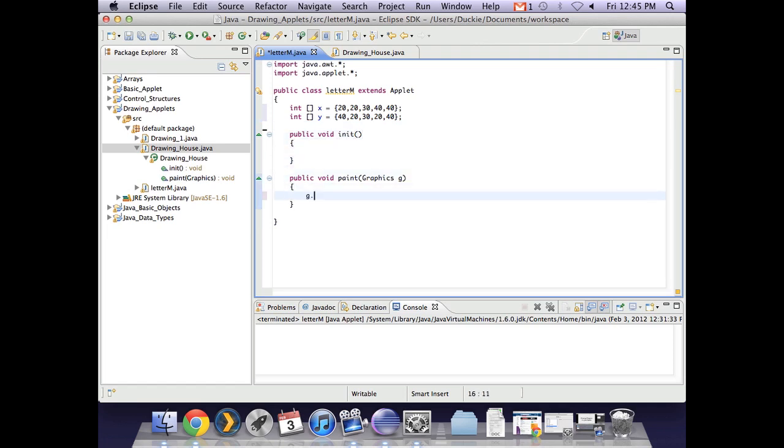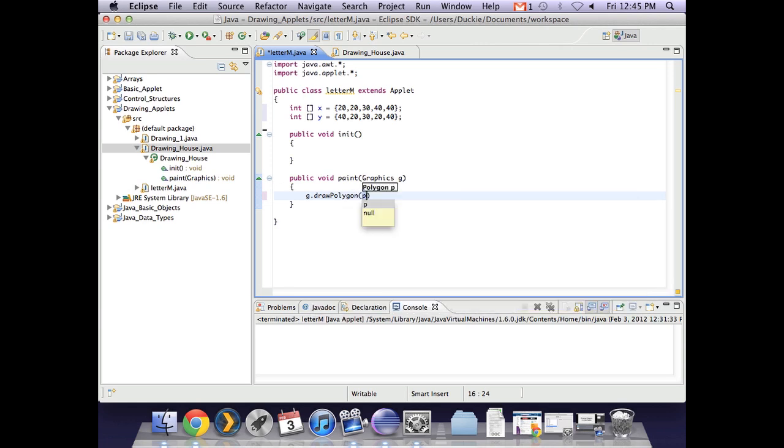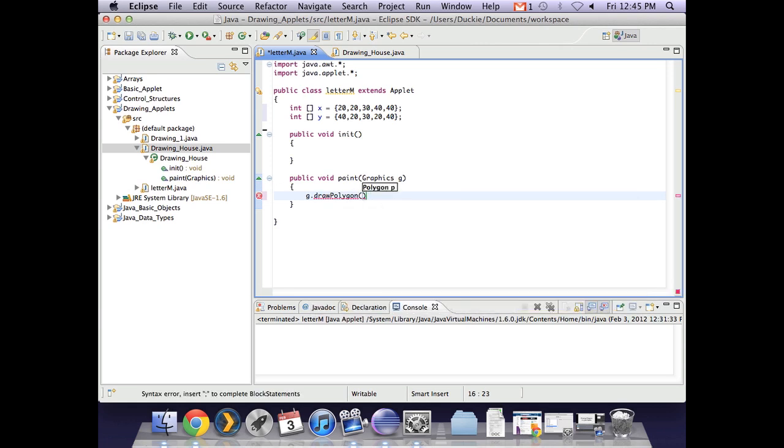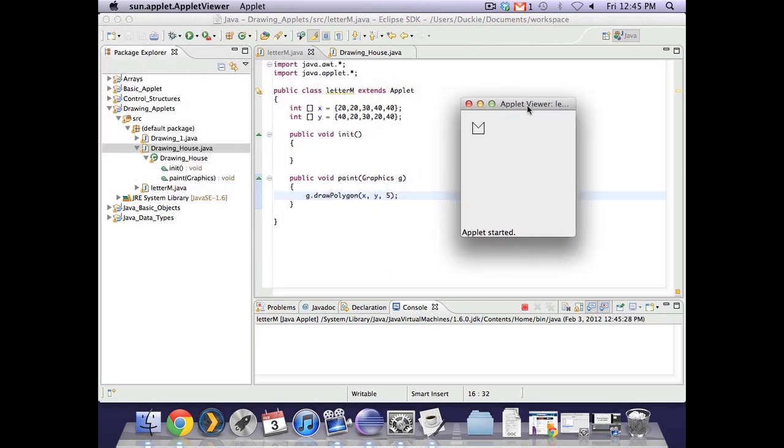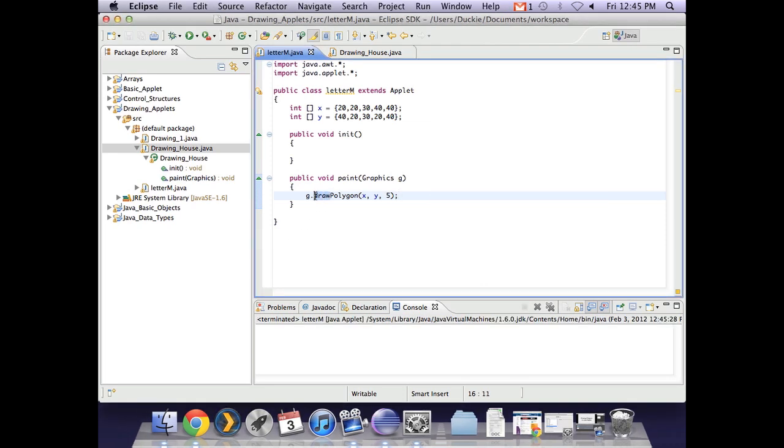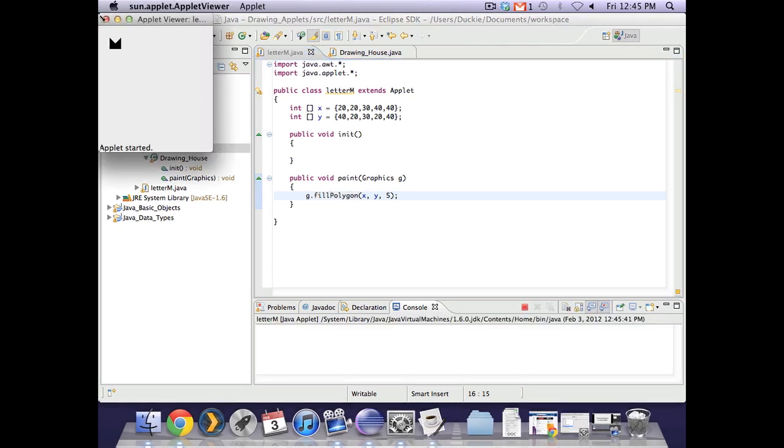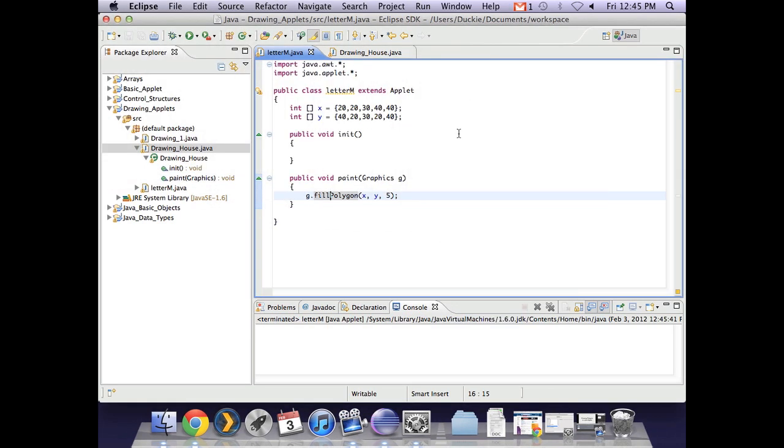Then in paint, we used g.drawPolygon. And then we had to give it the array containing all the x points, the variable containing all the y points, and then we need to tell it how many points there are all up. So if we just run that, let's have a look. And we've got our letter M that's closed in at the bottom. Now if I said fill polygon, that would end up a solid block.